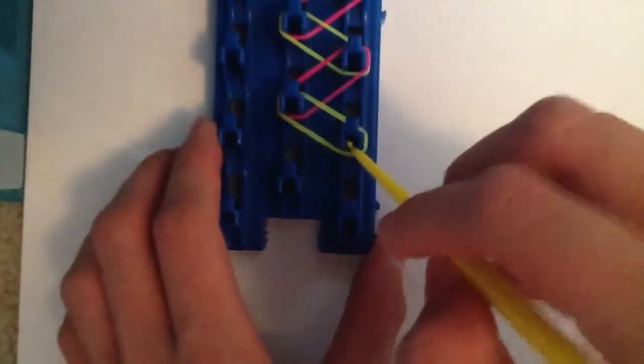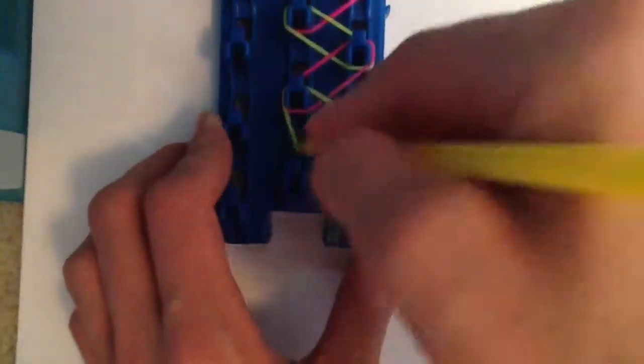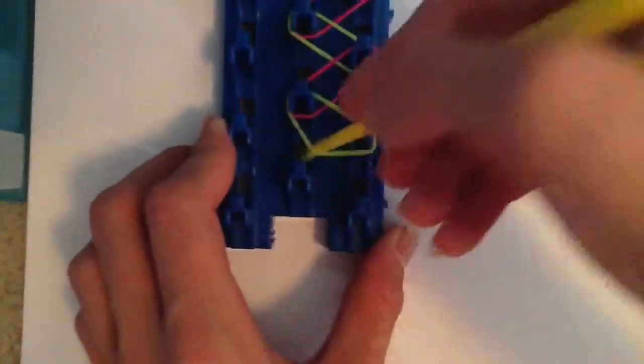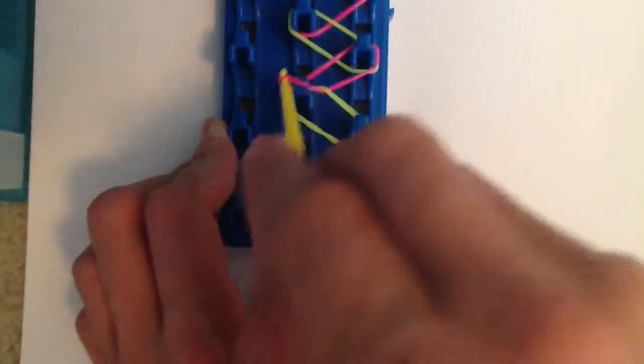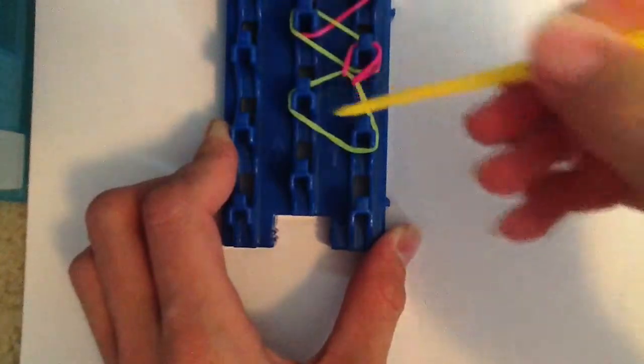And what you're going to do is you're going to skip this band right here. You're going to go under here on the middle column, and you're going to grab that pink band, the band right there, and loop it on itself like so.